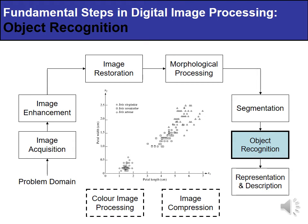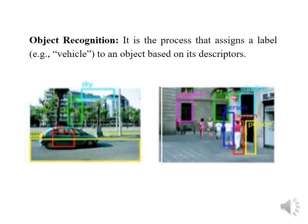The next step is object recognition. This step is for identifying and recognizing objects present in the image. For example, an object like a car can be identified in an image, and if a number of persons are present, each individual can also be identified and highlighted.